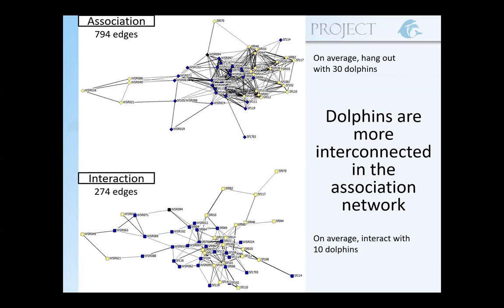On average, dolphins were observed hanging out with 30 dolphins in the period from 2013 to 2018, whereas they interacted on average with only 10 other dolphins. So just by looking at the very general features of these networks, we can already tell that we're going to get different information from an association network versus an interaction network, even when including the same 52 dolphins. Just because dolphins are hanging out in the same group, they may not always be interacting.